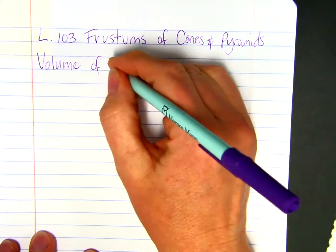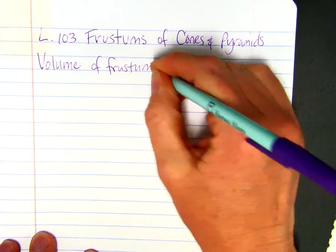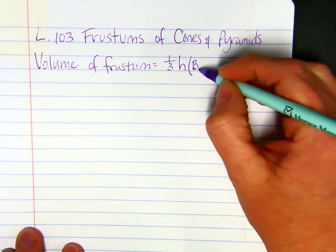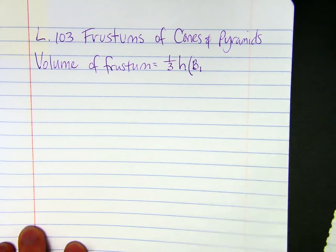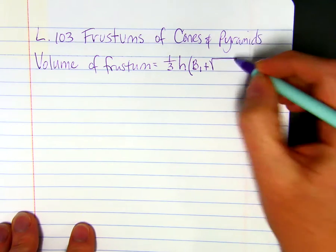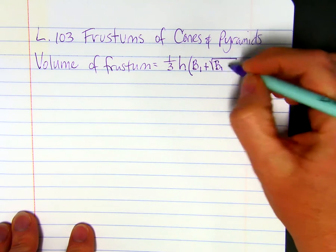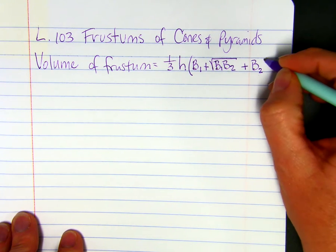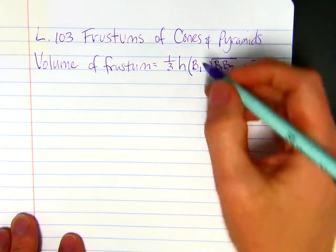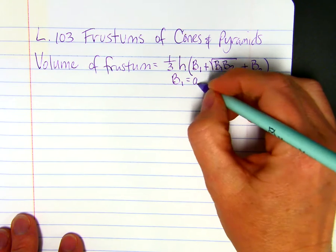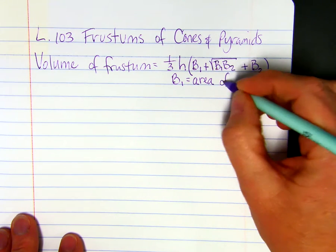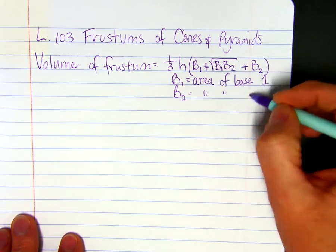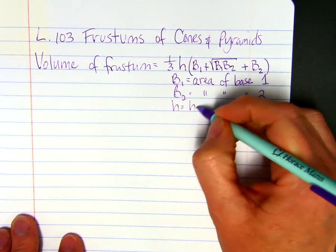To find the volume of a frustum, you do one-third times the height, and then you take the area of the base that's the bigger one at the bottom, plus the square root of the product of the area of the two bases, then you add the area of the base that's at the top where you cut off. B sub 1 is area of base 1, B sub 2 is area of base 2, and h is the height.